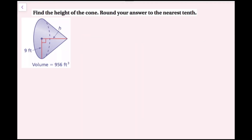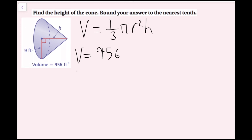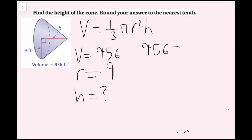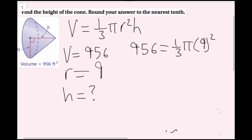Find the height of the cone. Round your answer to the nearest tenth. I'll write the cone formula again — it's always a good idea to write your formula: V equals one-third pi r squared h. I have my radius, which is 9 feet, and my volume, which is 956 cubic feet. Height is what we're solving for. So: 956 equals one-third pi times 9 squared times h.